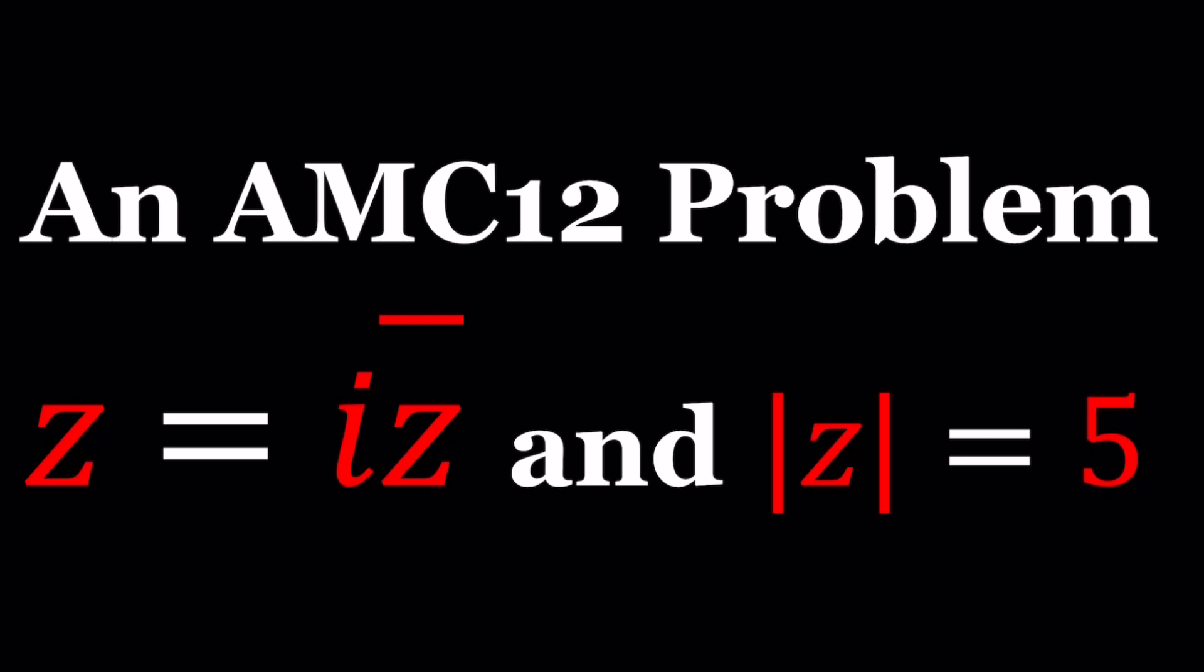We have a complex number z which is equal to i times its conjugate. Remember z bar is the notation for the conjugate of z, and its absolute value is equal to five. So we're going to find all complex numbers that satisfy these two equations. In other words, we have a system of equations. Let's get to work.